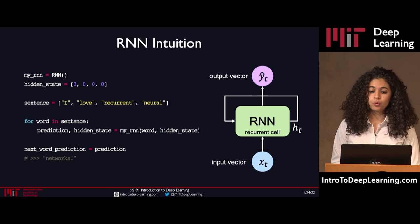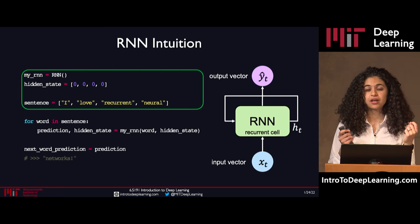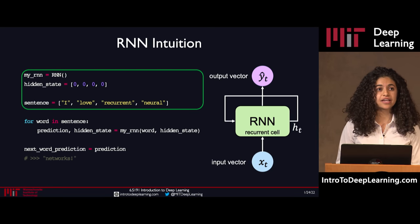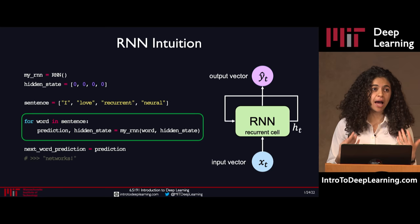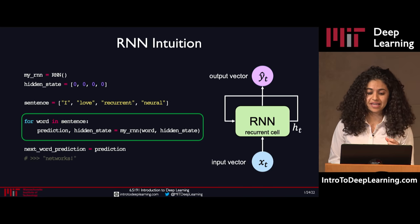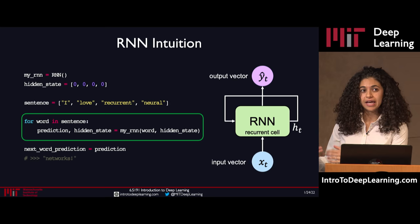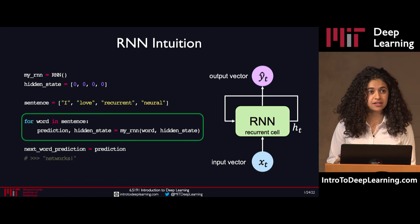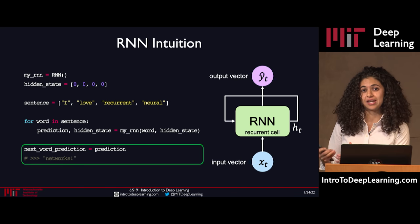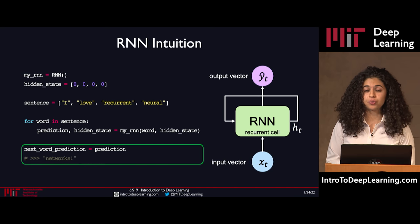We can step through the RNN algorithm in pseudocode to get a better sense of how these networks work. We begin by initializing our RNN — first initializing some first hidden state with a vector of zeros, and considering a sentence as our input sequence. Our task is to predict the next word at the end of the sentence. Our recurrence relation is captured by a loop where we iterate through the words in the sentence, feeding both the current word and the previous hidden state into our RNN model, which outputs a prediction for the likely next word and updates its internal hidden state.